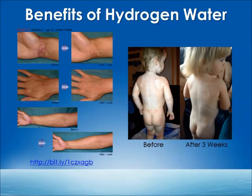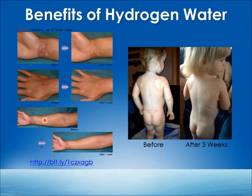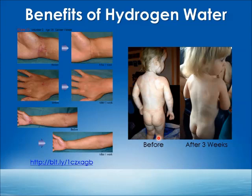The benefits of hydrogen water can be seen very effectively in skin conditions. One example is a patient with eczema treated with hydrogen water for a week, with visible results available in the case study linked here. Another example is a business contact's granddaughter who had psoriasis. When she drank and bathed in hydrogen water, she recovered very quickly — just after three weeks she was able to recover.